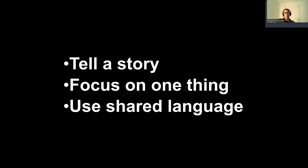Today's workshop covered three ways to improve our science communication: tell a story, focus on one thing, and use shared language. If you're still struggling to understand or implement these three principles, that's okay — one workshop cannot make you into an excellent communicator alone. It really takes persistence to fully learn these skills. I encourage you to set up a weekly literature discussion group where you discuss these three principles over a paper recently published in your field. You can also dig in and learn more by checking out the resources I'm about to recommend.